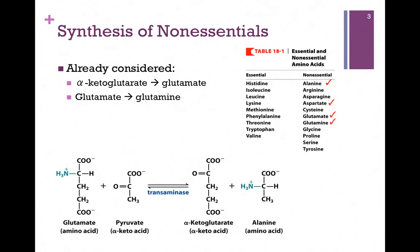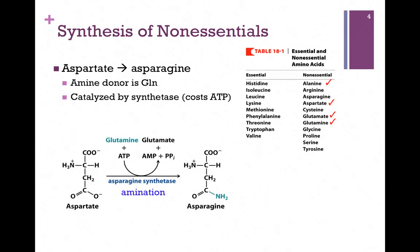So far, the reactions we've considered are primarily transaminase reactions. Here we have the synthesis of asparagine. We start with the amino acid aspartate, and we're going to transfer an amine group from glutamine to the side chain to form asparagine. Of course, glutamine becomes glutamate. This is actually an amination rather than a transaminase reaction — in a transaminase reaction we transfer the amine group to a keto acid, whereas here we're transferring it to an amino acid. It's catalyzed by a synthetase, which means it costs us some energy in the form of ATP. So let's check off asparagine from our list.